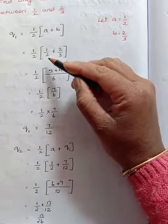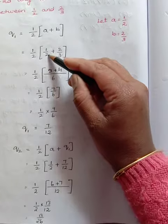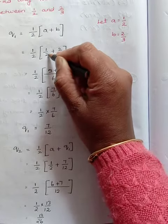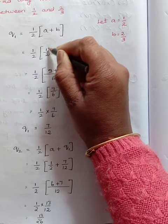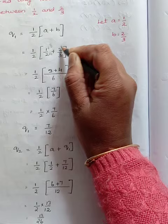So let us take LCM for 2 and 3. The LCM for 2 and 3 is 6. 2 to become 6 is into 3. 3 to become 6 is into 2.